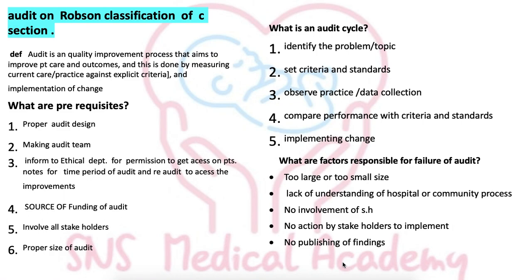What are the factors responsible for failure of the audit? The audit fails when the size is too large or too small — meaning doing the audit for too many years or only 15 days to two months. Other factors include lack of understanding of hospital or community process, no involvement of stakeholders, no action taken by stakeholders to implement the audit findings, and no publishing of audit findings so people don't know the recommendations or results.